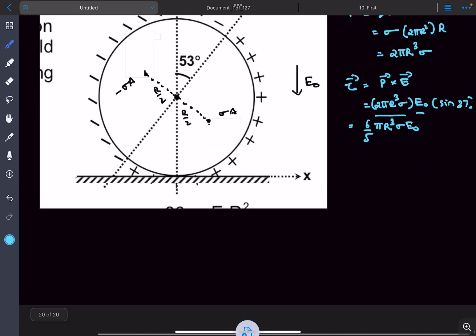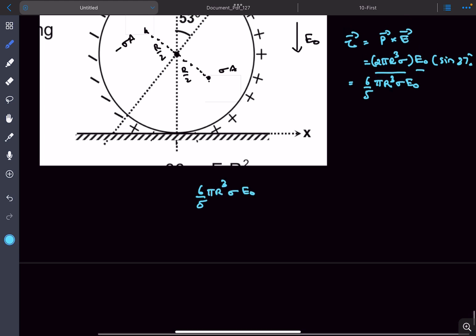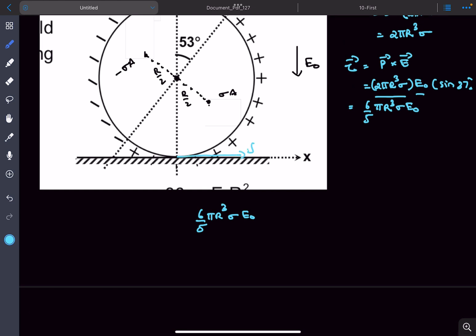Writing the torque equation about the center of mass: the torque due to the dipole is 6/5 πR³σE₀. Assuming friction acts in this direction, the torque due to friction is -f×R about the center of mass.